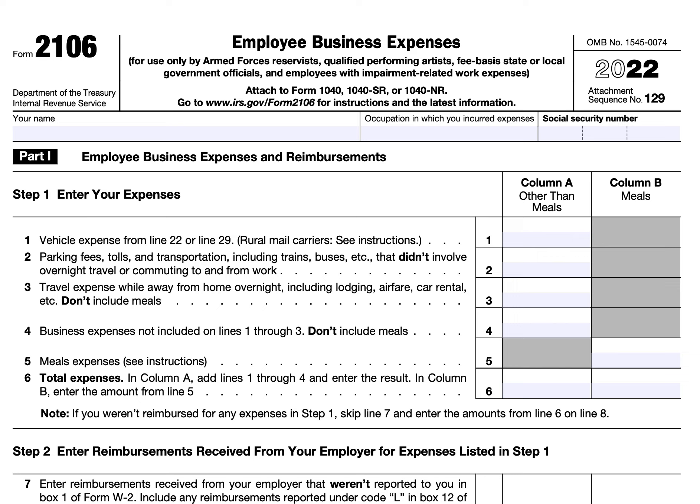You are only allowed to deduct job-related expenses that are considered ordinary and necessary to your job. An ordinary expense is one that is common and accepted in your field of trade, business, or profession. A necessary expense is one that is helpful and appropriate for your business. You can only claim a tax deduction for business expenses that exceed your reimbursements — you cannot be reimbursed by your employer and then claim that same expense on your tax return as a deduction.